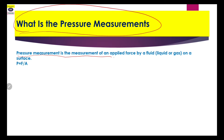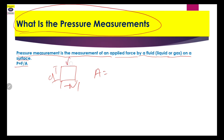Our first question is: what is pressure measurement? Pressure measurement is the measurement of an applied force via fluid, liquid, or gas on a surface. If the line and width are given, then the area can also be calculated. The pressure is equal to applied force upon area.